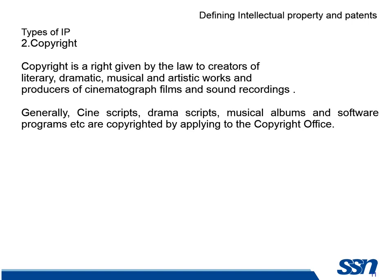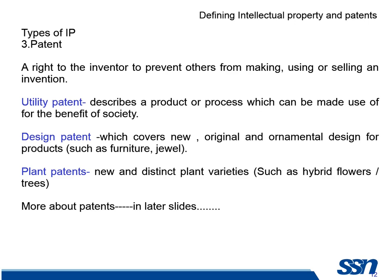The third one is a patent — a right to the inventor to prevent others from making, using or selling an invention. There are different kinds: a utility patent, which describes how a product or process is made, and a design patent, which covers only how it appears, not the functionality. There are also patents for plants. We will see more about this in future slides.